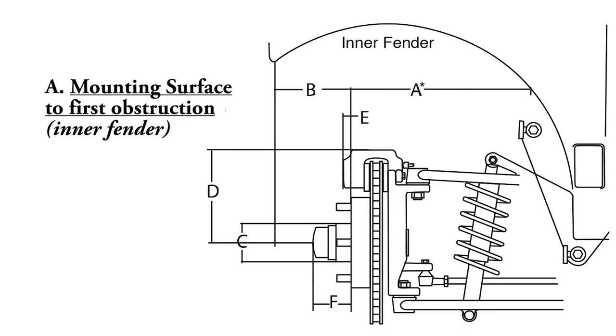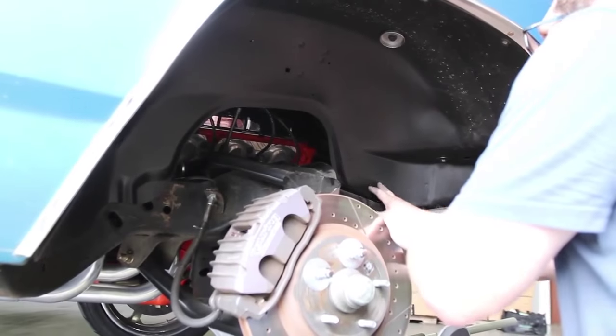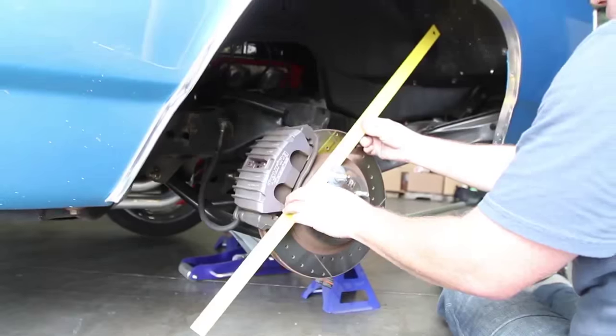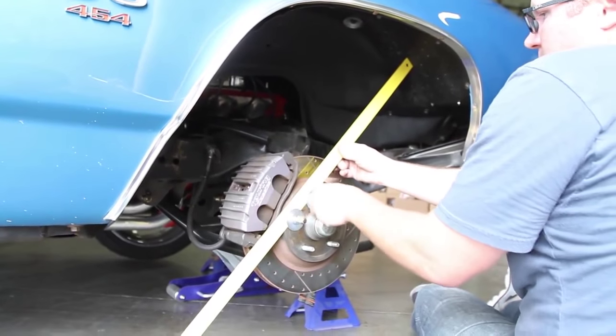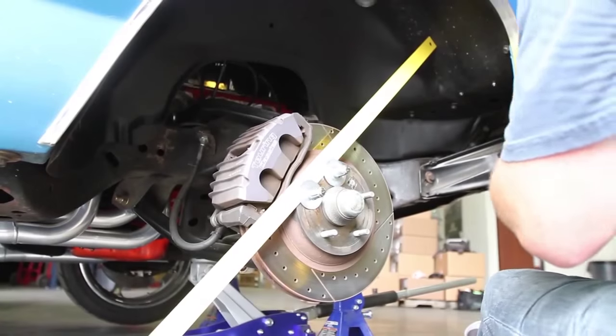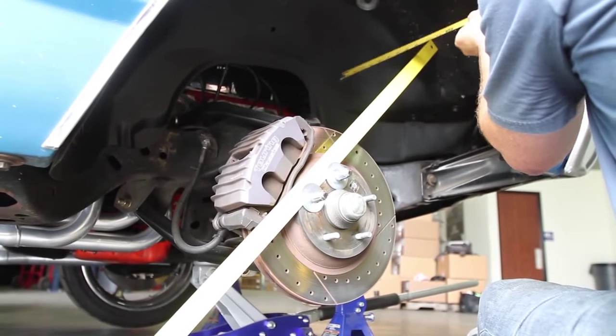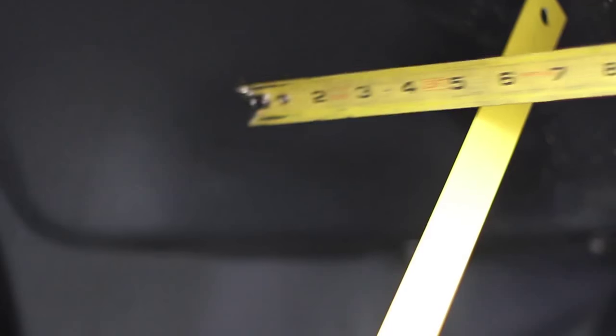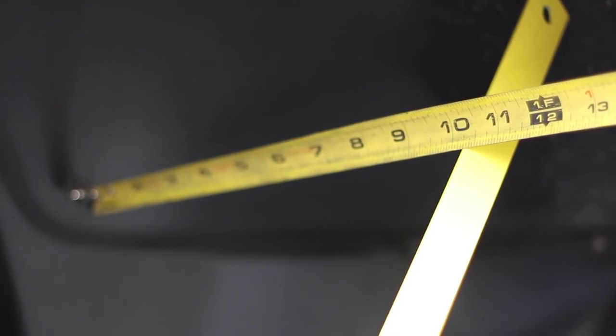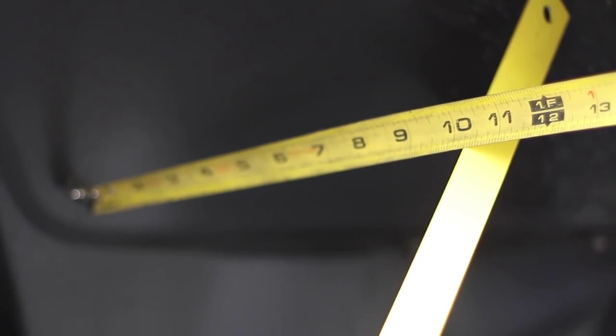This obstruction could be the inner fender, the frame rail, a suspension component, etc. Place the straight edge flat against the wheel mounting surface. A little trick that will make this process easier is to bolt the straight edge to the brake with a couple large washers and lug nuts. Then, measure from the straight edge in to that first contact point for the tire. In this case, it's the inner fender. Write down that distance for section A.